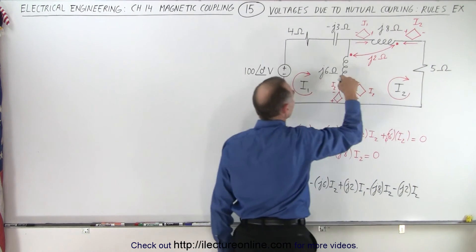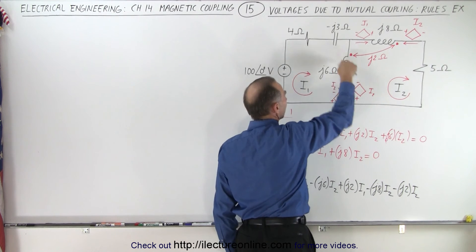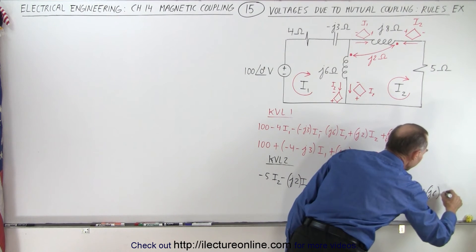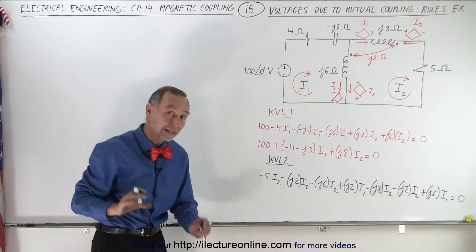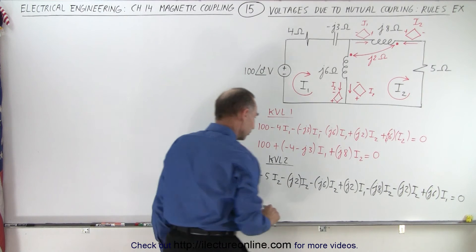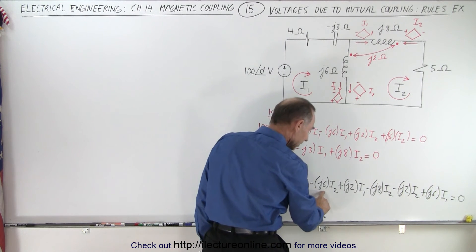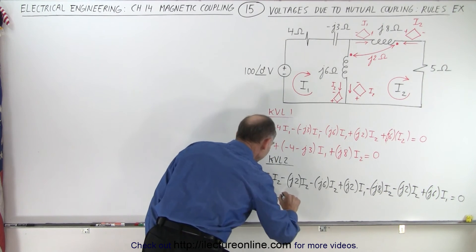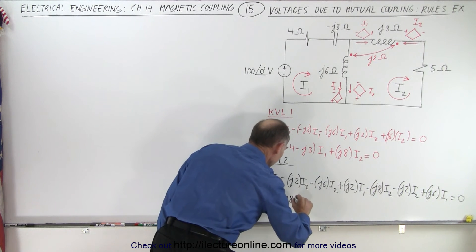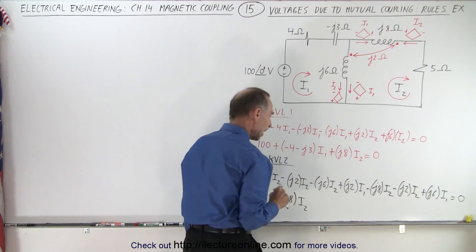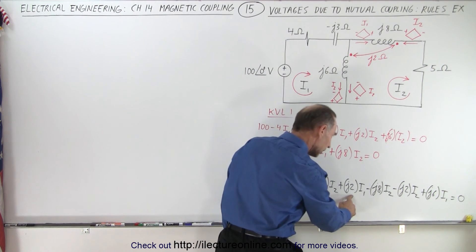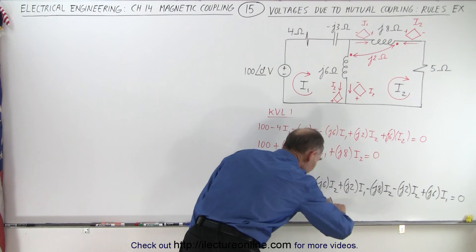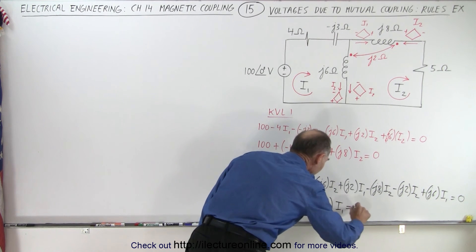And we have one more: I1 going through this inductor — we go against that current — voltage rise — plus J6 times I1. All that adds up to zero. Combining like terms for I2: minus 5, minus J2, minus J6, minus J8, minus J2 gives us minus 5 minus J18 times I2. For I1: plus J2 and plus J6 gives us plus J8 times I1. That all adds up to zero.